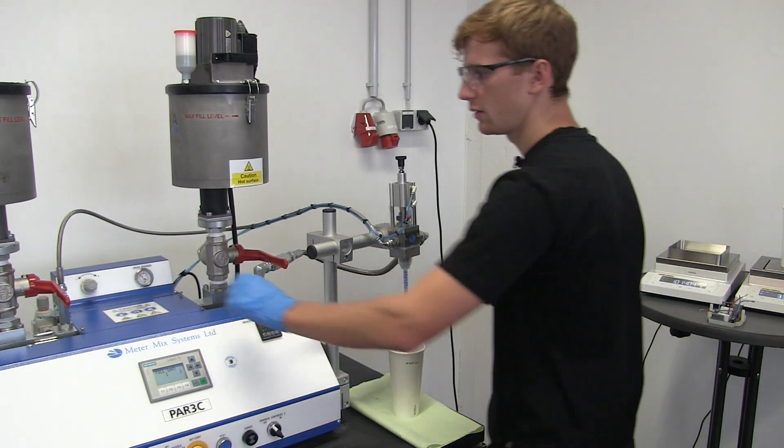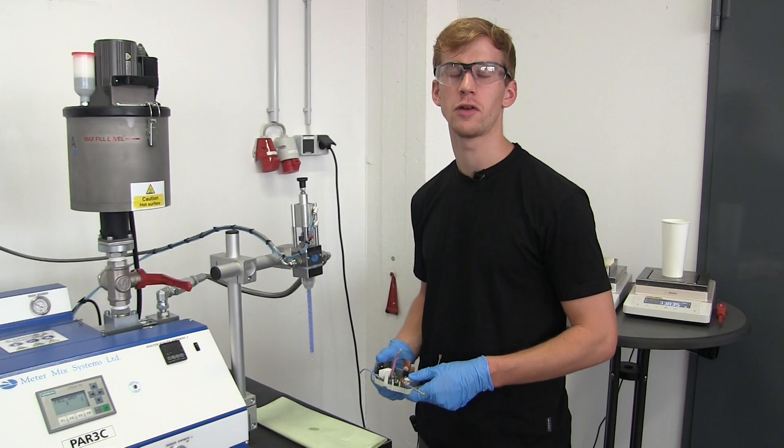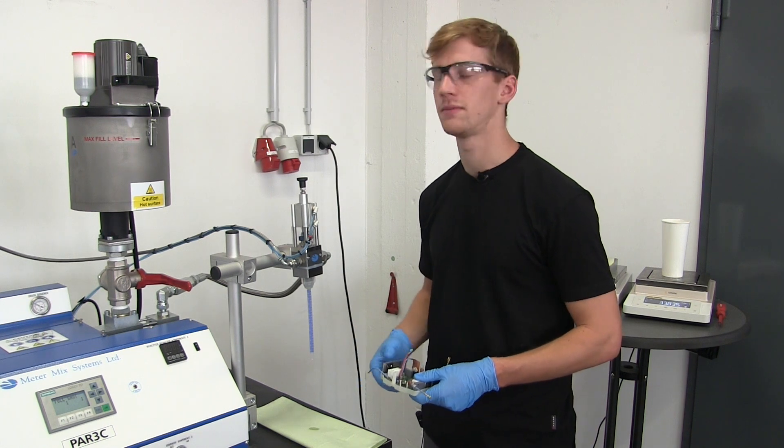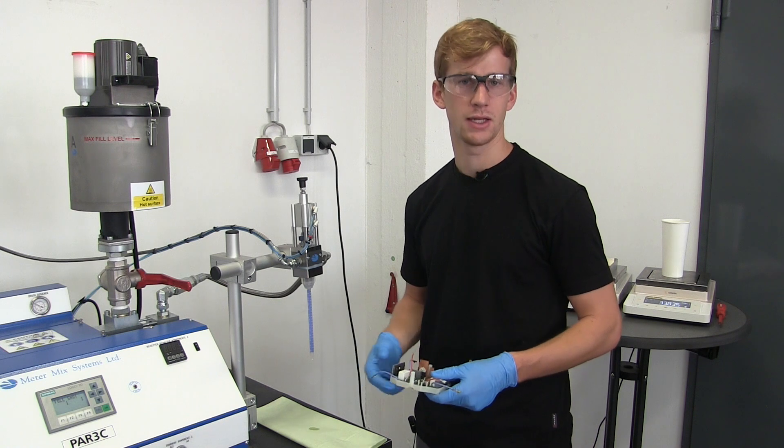You can use the pneumatic regulator to adjust the outflow rate. After completing all of these steps, your machine is ready for operation. As an example, we will be looking at how to pot an electronic component.